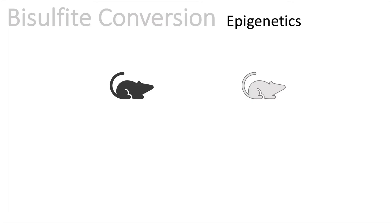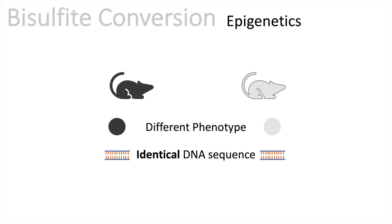Here we have two mice, and we can already see they have a different phenotype. The first mouse is dark gray and the other one is brighter in color. But what if I tell you that these mice have the same and identical DNA sequence? We know that genes are responsible for phenotypes, but how is a variation in phenotype possible if these mice have the exact same identical DNA sequence? This is possible with epigenetics.